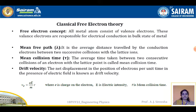Mean free path, denoted by lambda, is the average distance traveled by the conduction electron between two successive collisions within the lattice ions. Mean collision time, denoted by tau, is the average time taken between two consecutive collisions of an electron with the lattice point. Drift velocity is the net displacement of the position of the electrons per unit time in the presence of an electric field. Using these three definitions, we are going to explain how conductivity takes place as per CFET.